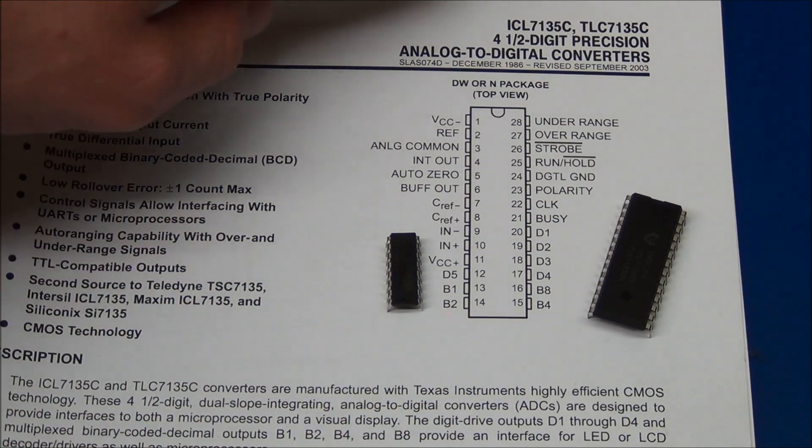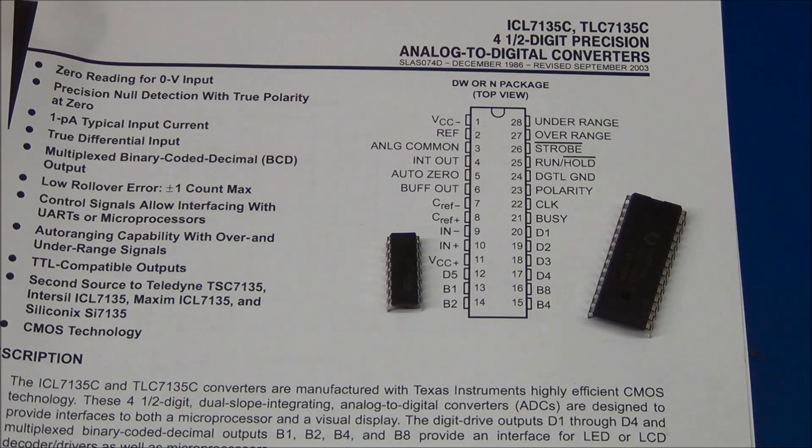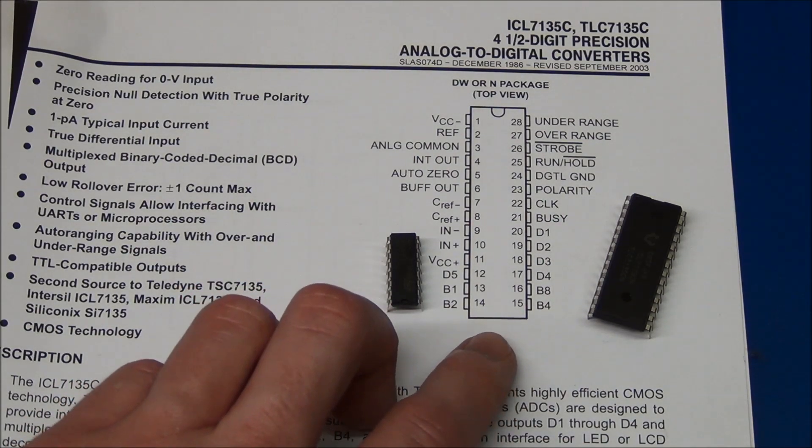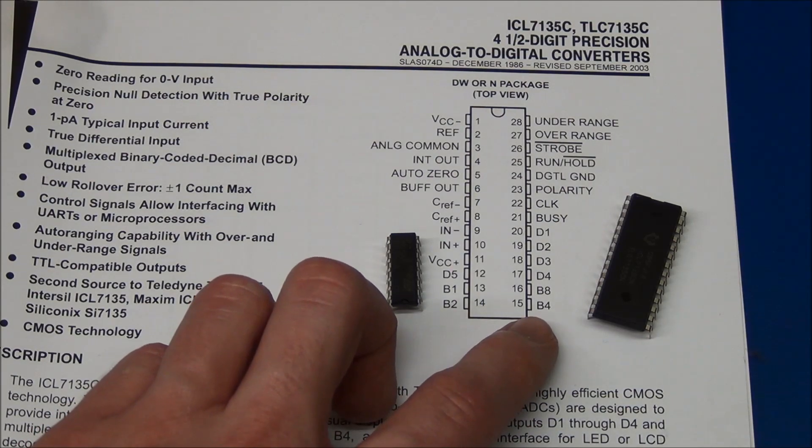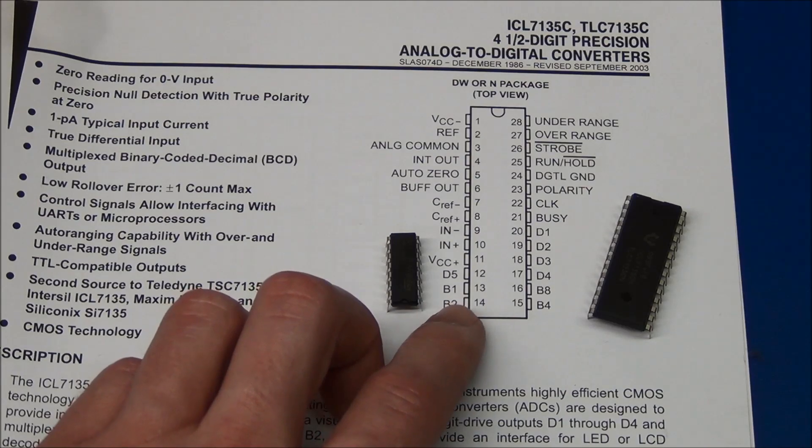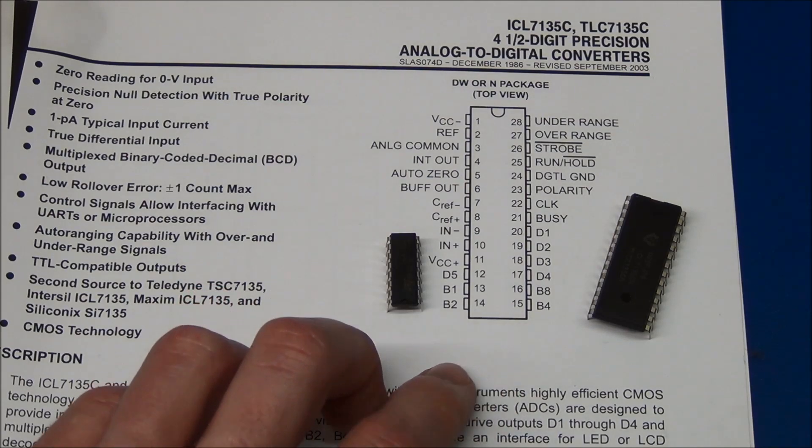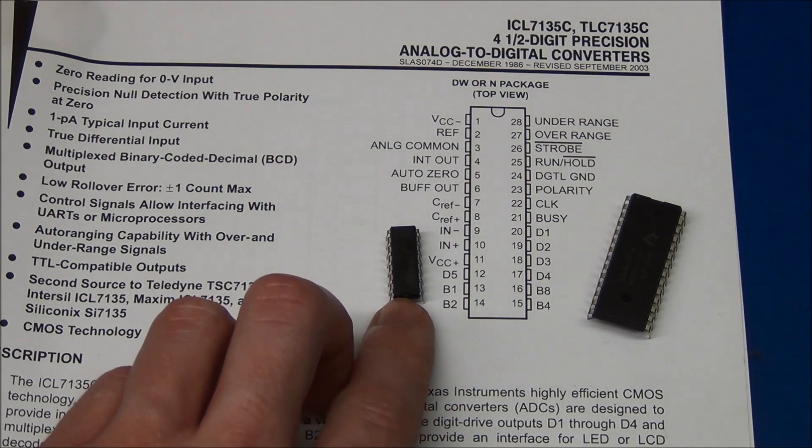Say if you use the ICL7135 analog to digital converter here, they are often used as voltmeters or ammeters. Then you will get the data output as a 4-bit binary coded decimal. And kind of the only way to get these shown on 7-segment displays would be to use a chip like this.